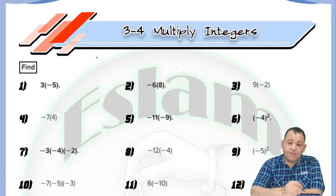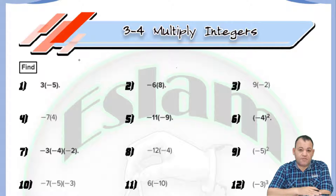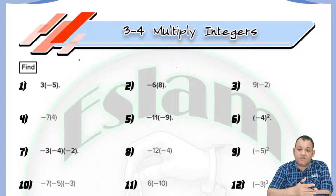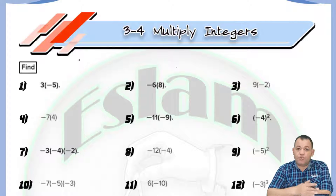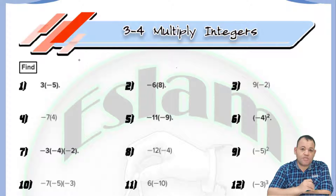In multiplying integers, number one, we need to write the sign of the answer. We can find the sign of the answer when multiplying two numbers: if the two numbers have the same sign, the answer will be positive. If the two numbers have different signs, the answer will be negative.